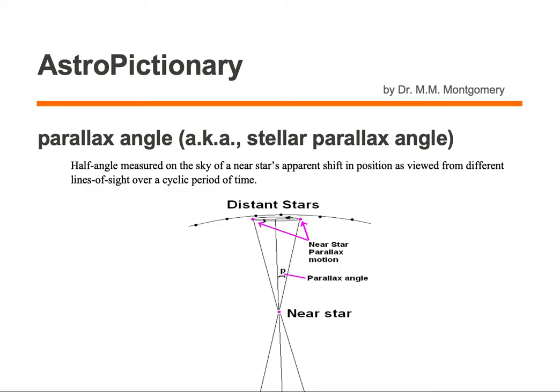Parallax angle, also known as stellar parallax angle, is a half angle measured on the sky of a near star's apparent shift in position as viewed from different lines of sight over a cyclic period of time.